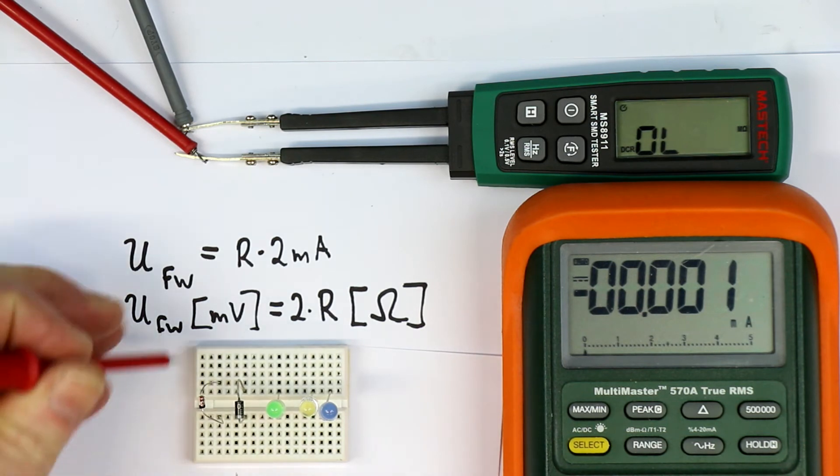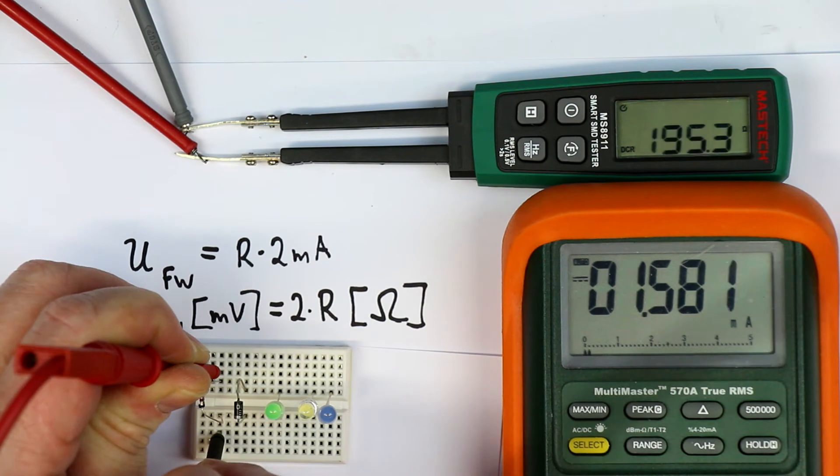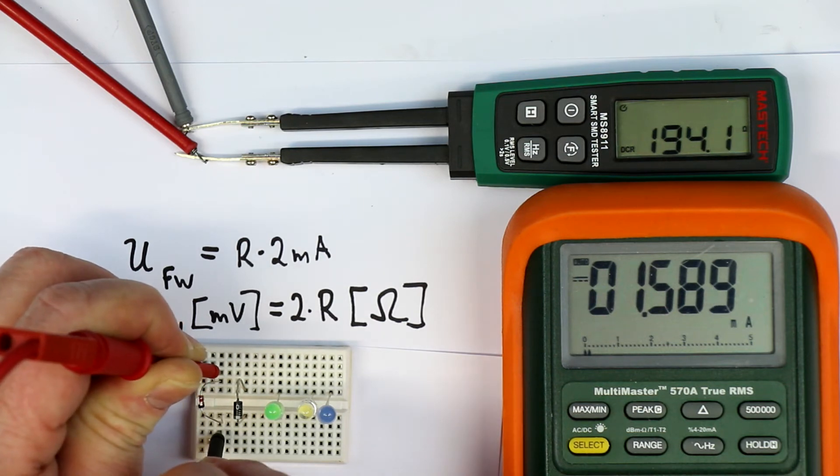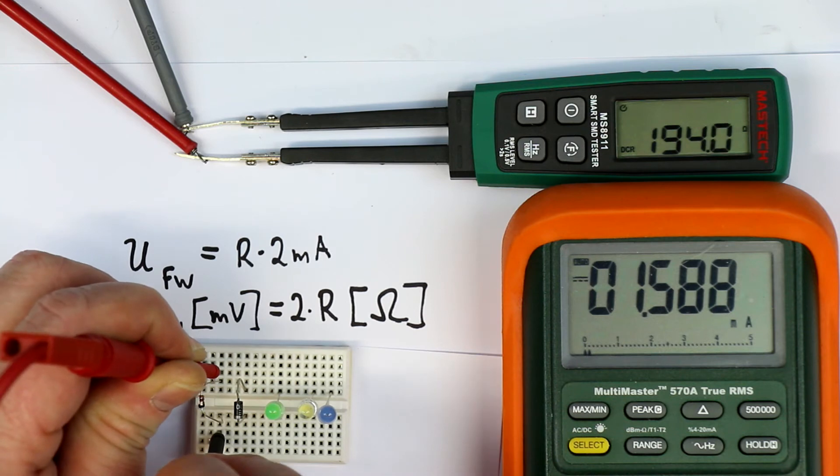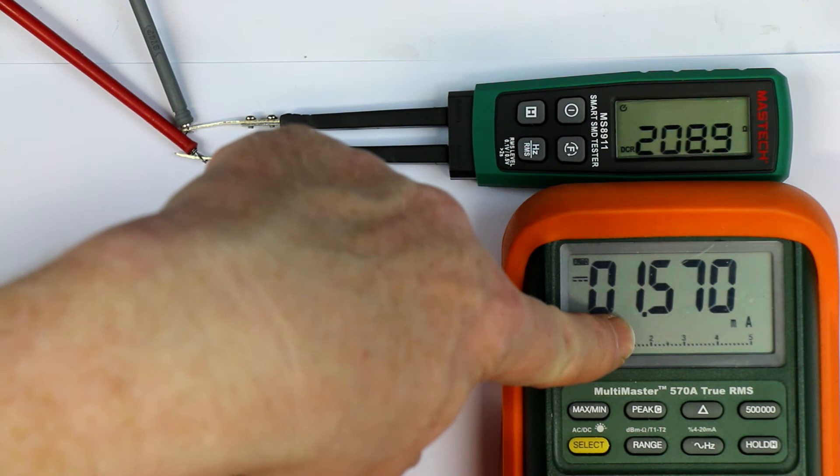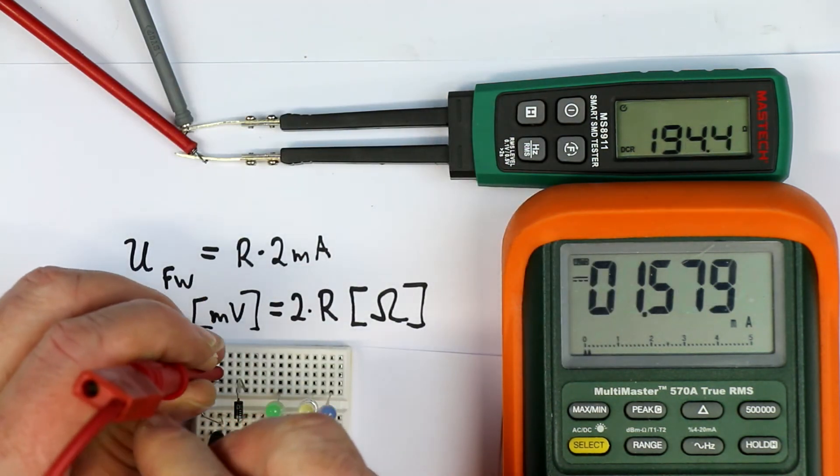Now let's try this out first with a Schottky diode. And the auto ranging takes a little time. So we get a displayed value of nearly 200 ohms. That would give 400 millivolts. Now Schottky diodes usually have only 300 millivolts forward voltage at such low currents. But here we can see the measurement current is lower than our 2 milliamps that we just had.